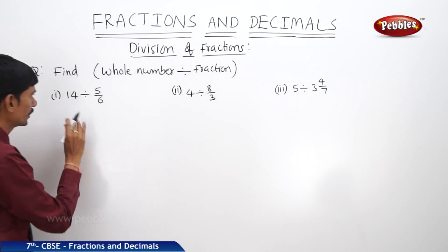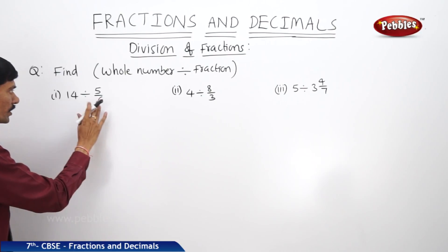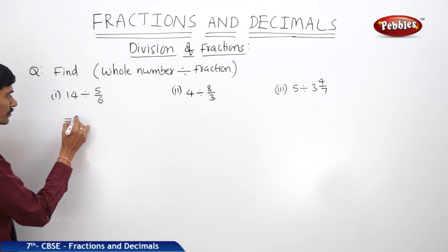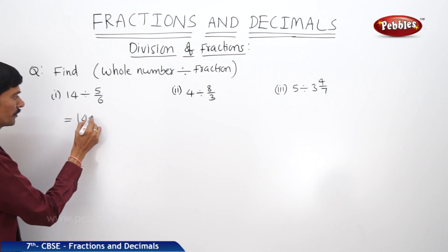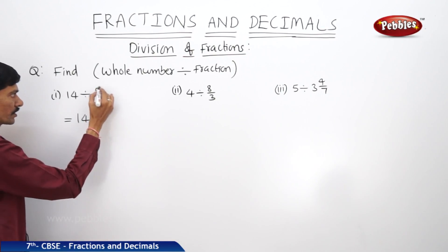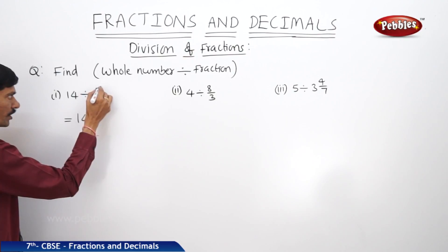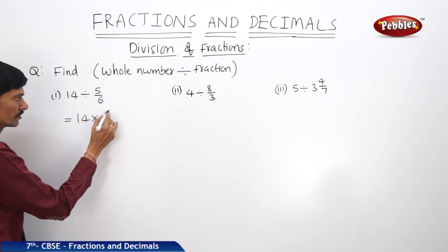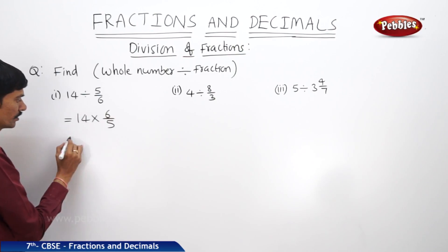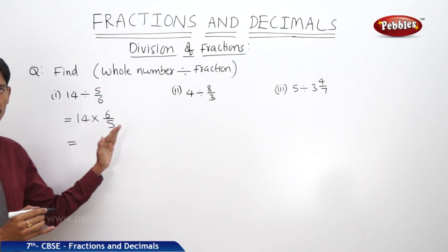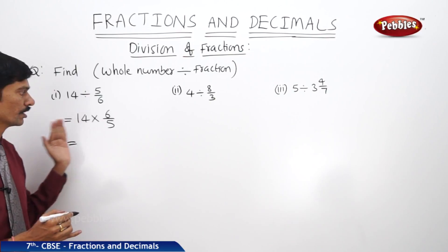When we divide a whole number by a fraction, we write the same as the whole number multiplied by the reciprocal of the fraction. So what is the reciprocal of 5/6? The reciprocal of 5/6 is 6/5.